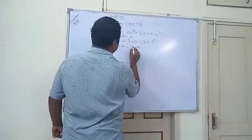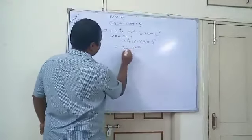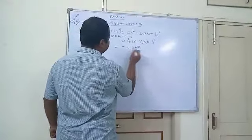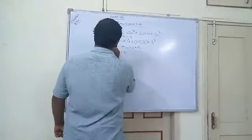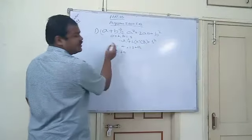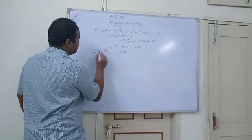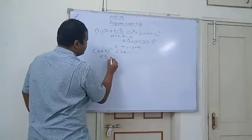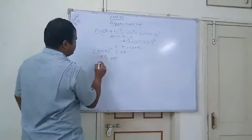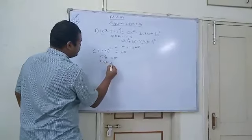Means 13, 4 plus 4, 16, 16 plus 9, 25. So A plus B whole square is 25. So it is becoming equal to 2 plus 3 whole square is equal to 5 whole square. So 25 is equal to 25.